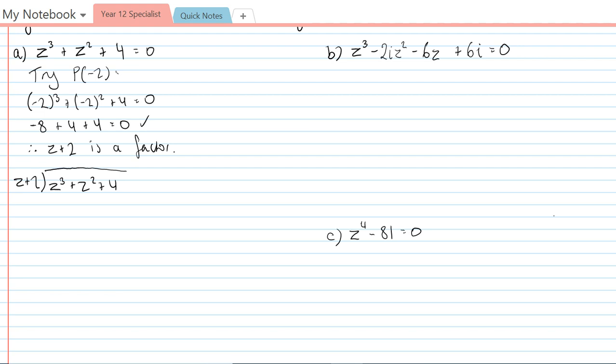And so first we ask how many z's go into z³. Well there's z². So multiplying that with the z + 2 is going to give z³ + 2z². We subtract that. And z³ minus z³ cancels out. z² minus 2z² is negative z².